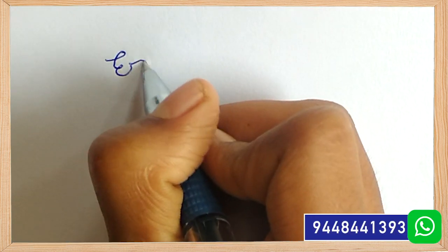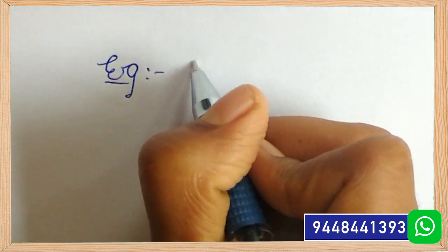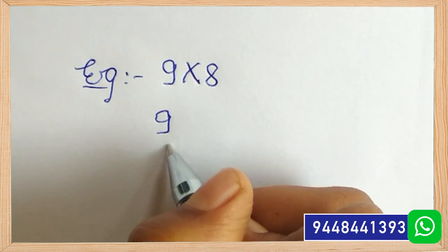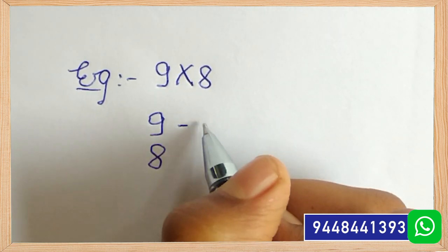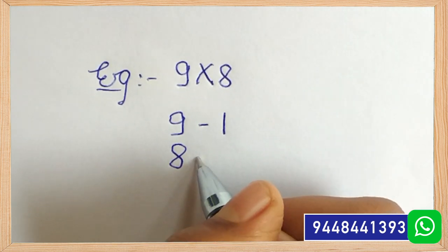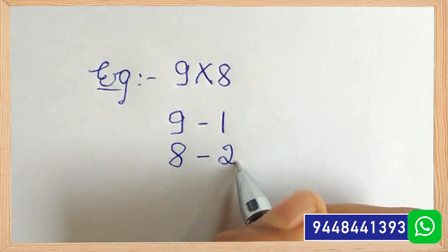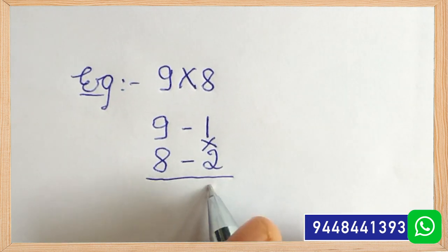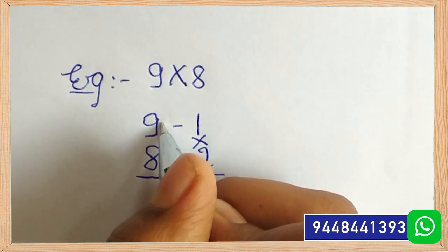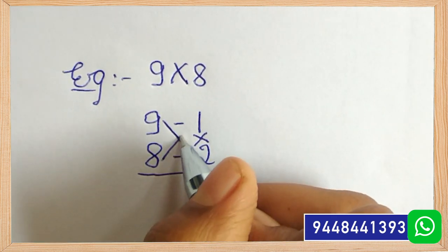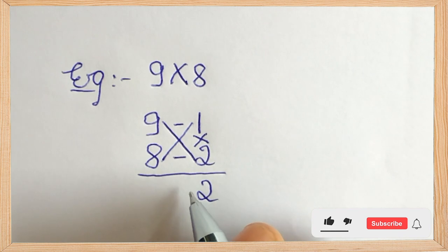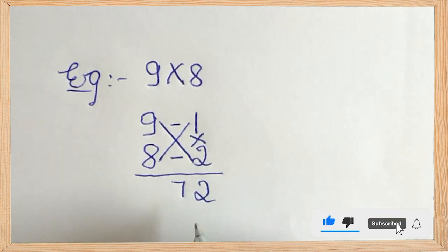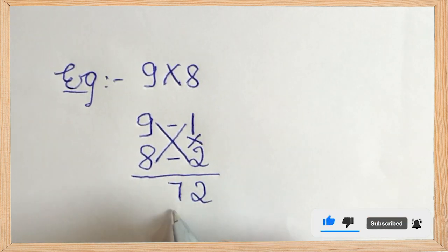Second example: 9 into 8. First, take the difference of two digits with 10. Here, 10 minus 9 is 1 and 10 minus 8 is 2. Multiply 1 into 2, that is 2. Now, either take 9 minus 2 or 8 minus 1 — both give the same answer, that is 7. So the total answer is 72.